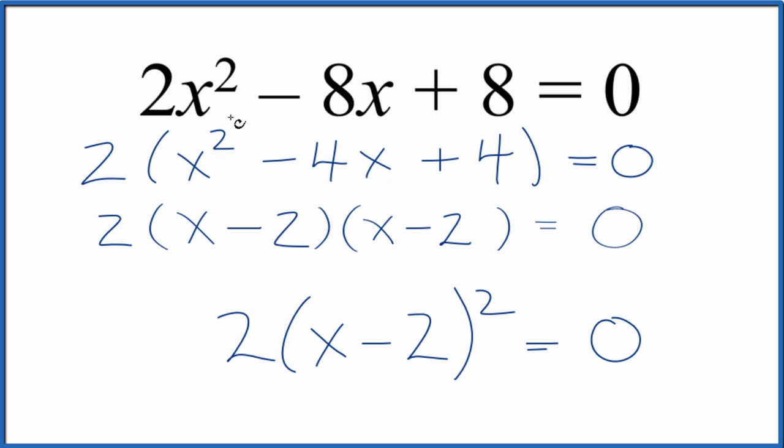This is Dr. B factoring the equation 2x squared minus 8x plus 8 equals 0. Thanks for watching.